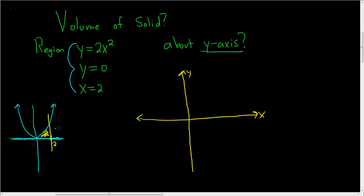And we only care about this piece over here, this enclosed region. So here we have y equals 2x squared. And then here we have the line x equals 2, and then here we have the line y equals 0.